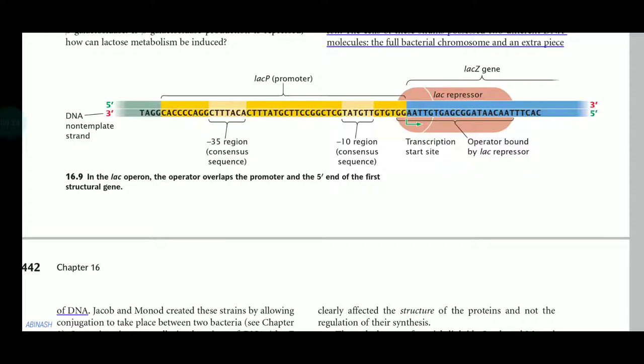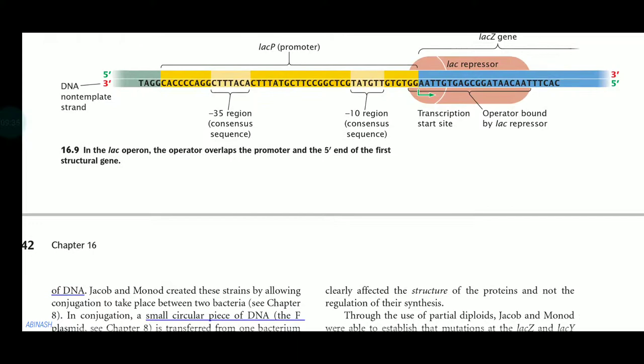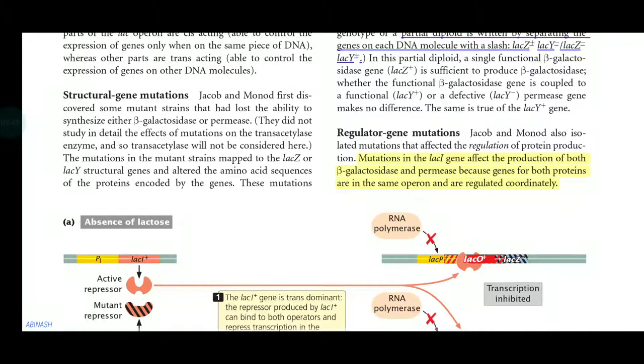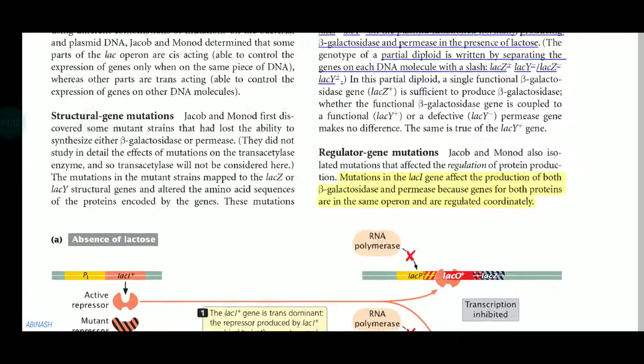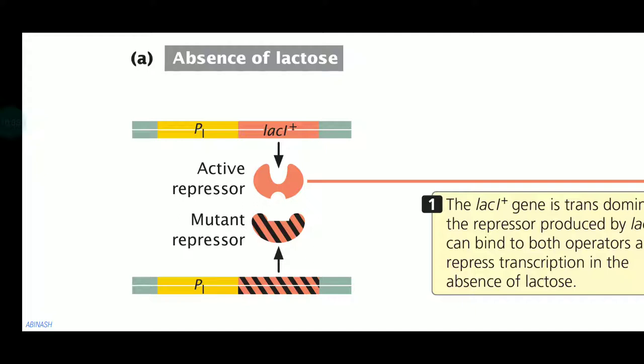We know what a partial diploid is — it's important. We also have a basic idea about the lac promoter, lac gene, and related things. Now there are two important systems in lac operon mutation: structural gene mutation and regulatory gene mutation. In the first one, we deal with the absence of lactose.